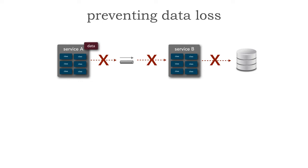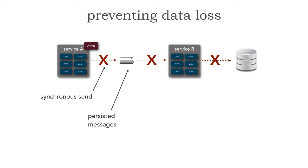Service A has some data that needs to eventually get to service B and ultimately into the database. The first way to prevent data loss is to use persisted message queues combined with synchronous send. When you send a message to the queue, that's a blocking wait on that method call. The broker will receive that message, make sure it is persisted, get the acknowledgement, and only then send success back. With synchronous send combined with persisted messages, there's simply no way to lose data. This is all out-of-the-box stuff within basic messaging.